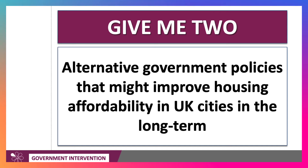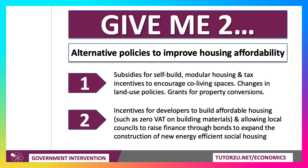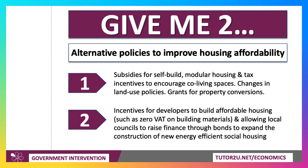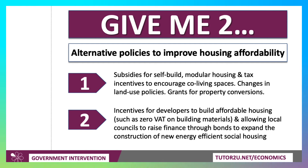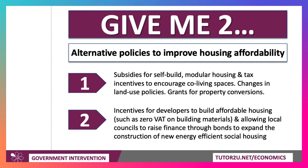Two alternative government policies to improve housing affordability: one would be to offer subsidies for self-build and modular housing and tax incentives to encourage co-living spaces, along with grants for construction companies to convert property. And secondly, zero VAT on building materials and allowing local councils to raise finance through the issue of bonds to expand the construction of new energy-efficient social housing. These are two important alternative strategies to improve affordability of housing rather than just imposing a rent control.